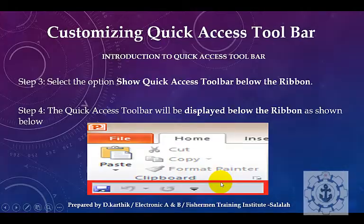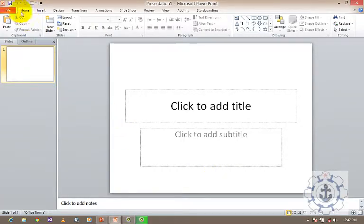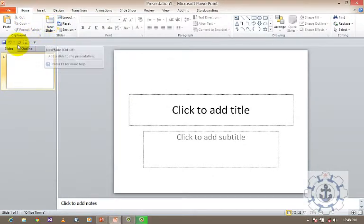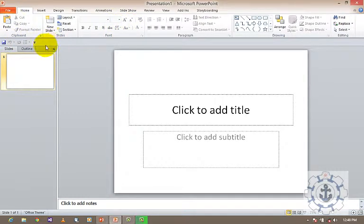Let me show you. Place the cursor on the Quick Access Toolbar and right-click it. Here is the option: 'Show Quick Access Toolbar Below the Ribbon.' Click this option. Now you can see the Quick Access Toolbar is below the ribbon. This is called the ribbon, and now the Quick Access Toolbar is below it.